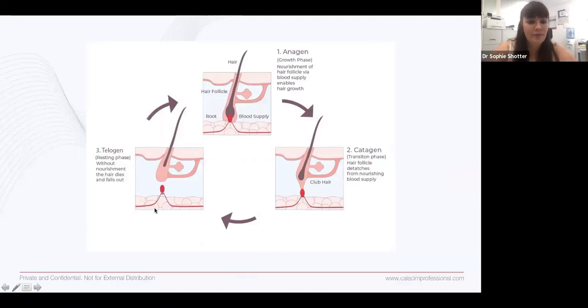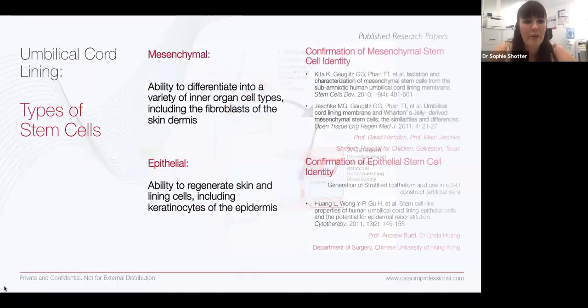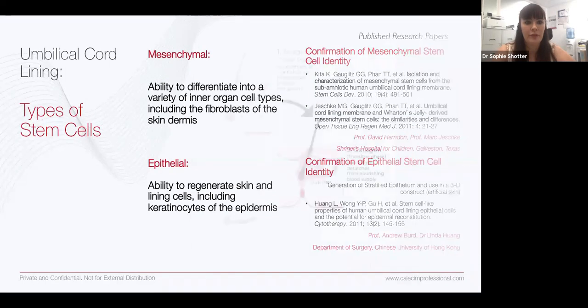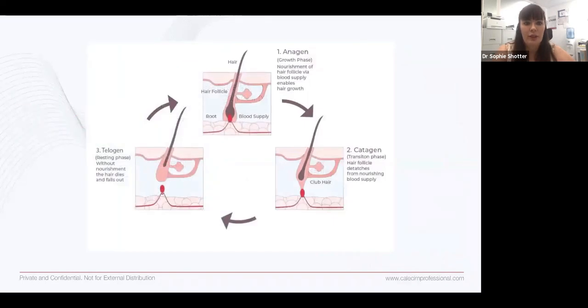Within calecin, we talk about two types of stem cells, the mesenchymal and the epithelial stem cells. These are the two types of stem cells which are found within the hair follicle.